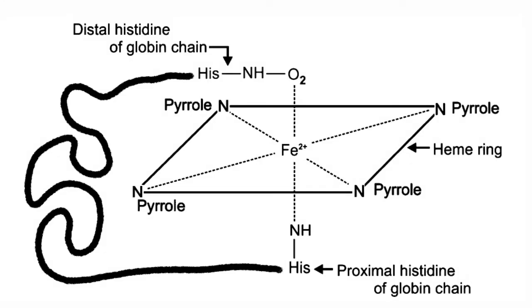The iron atom which is held in the center of the heme has six coordination bonds. Out of these six coordination bonds, four bonds are formed with the nitrogens of the four pyrrole rings. The fifth bond is formed between iron and the nitrogen atom of imidazole group of histidine residue of the globin polypeptide chain. And the sixth coordination and the last bond is formed between iron and the oxygen.